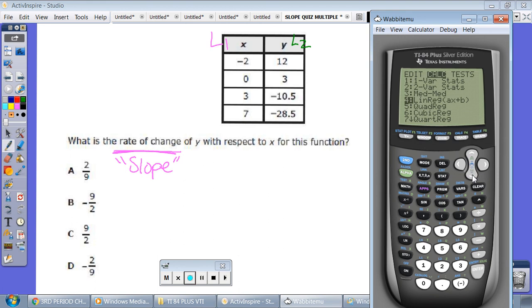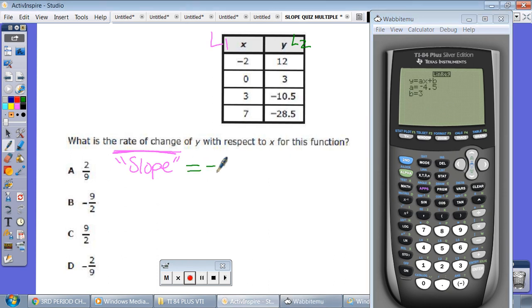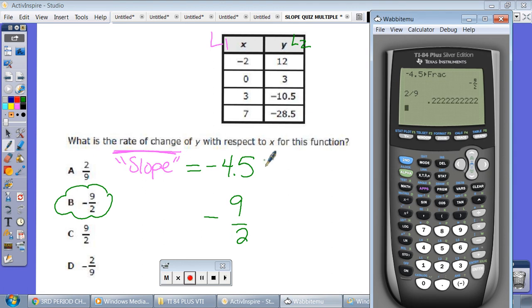So we have them typed in. We go stat, calc. We're still talking about slope of a line. So we're going to look for the letter a when it calculates. And it's going to give me a decimal. It's telling me that the slope is negative 4.5. So I write it down first. Negative 4.5. We're going to math, frac, enter. And that is the same as saying negative 9 over 2. Now you could, if you wanted to, if you forgot about math, frac, enter, you could take each answer choice. So I could start here with letter a and go 2 divided by 9. Is 2 divided by 9 the same as negative 4.5? No. Then you go down to letter b. Is negative 9 divided by 2 the same as negative 4.5? Yes. And our answer is b.